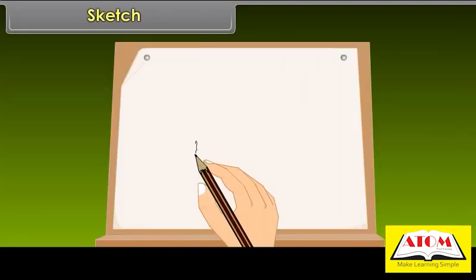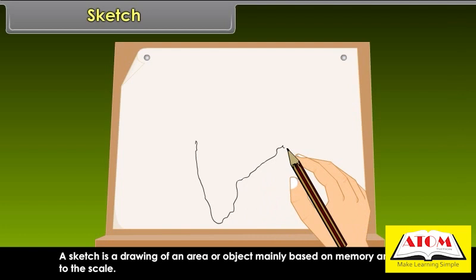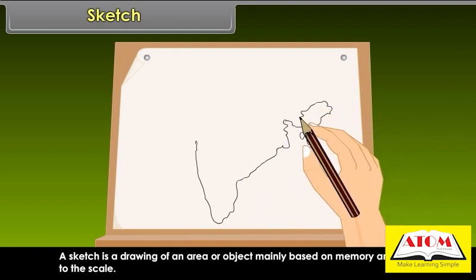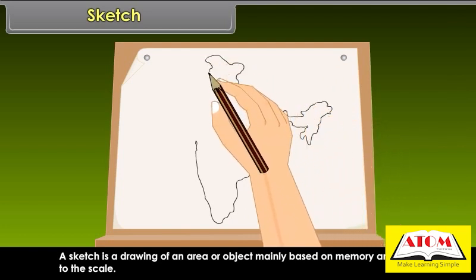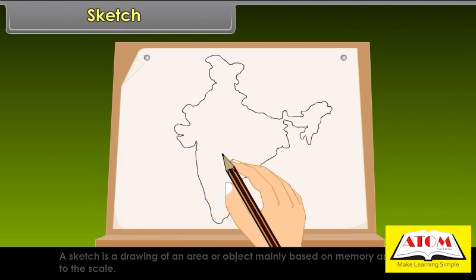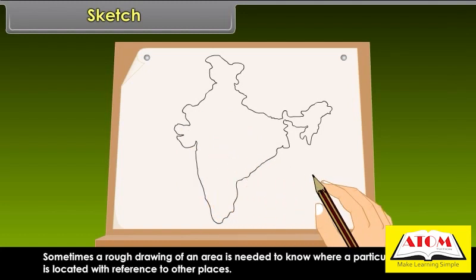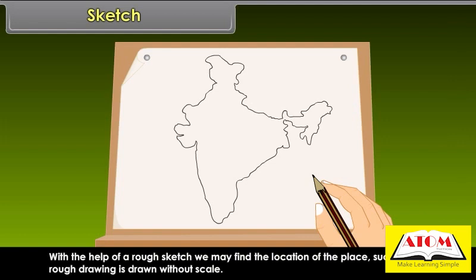A sketch is a drawing of an area or object mainly based on memory and not to scale. Sometimes a rough drawing of an area is needed to know where a particular place is located with reference to other places. With the help of a rough sketch, we may find the location of the place. Such a rough drawing is drawn without scale.